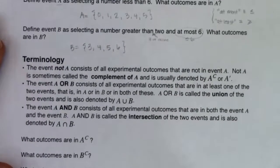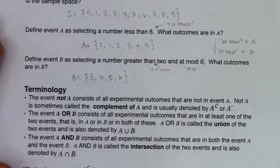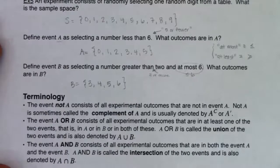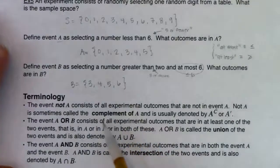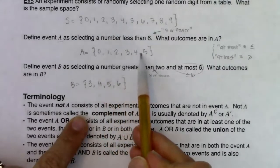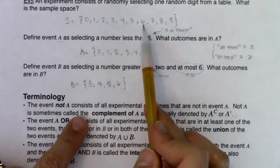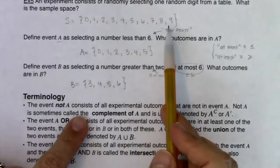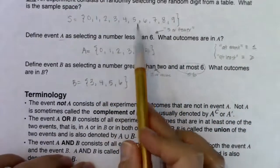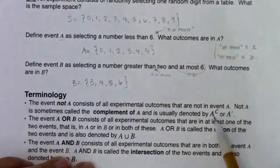Let me demonstrate using event A and the sample space. Zero, one, two, three, four, and five are in A. The numbers from the sample space that did not make it into A are six, seven, eight, nine — those are in A complement.